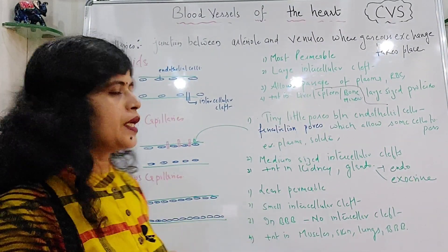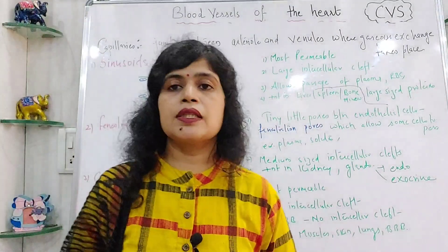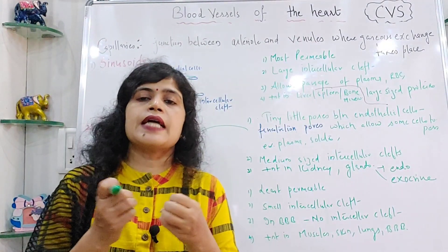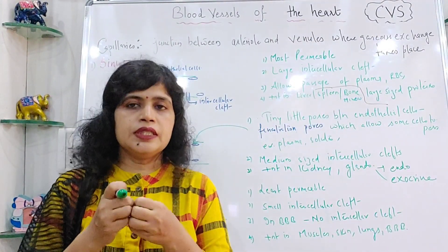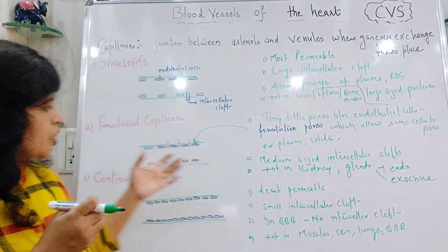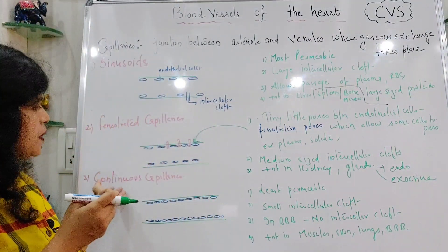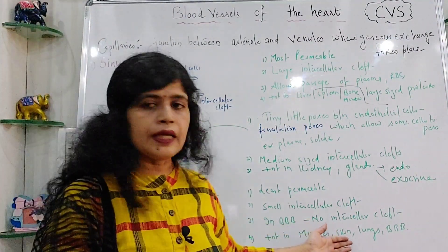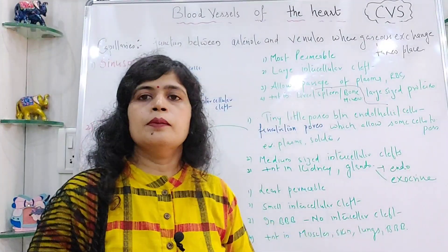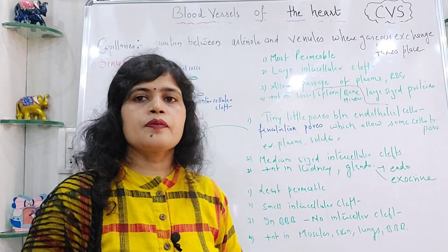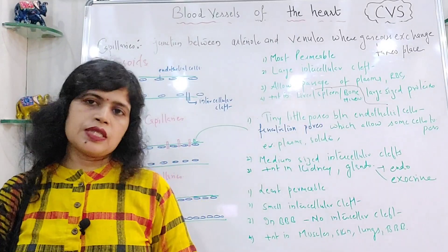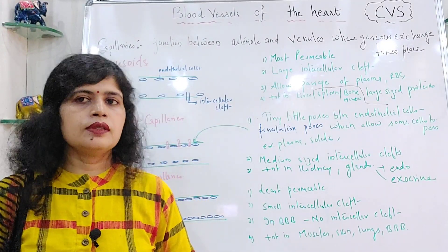In the blood-brain barrier, the endothelial cells are very tightly attached to each other by tight junctions, providing maximum protection. Continuous capillaries are present in muscles, skin, lungs, and forming the blood-brain barrier. This was all for today's topic. Thanks for watching.